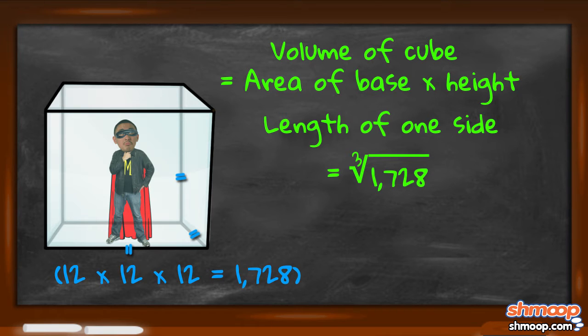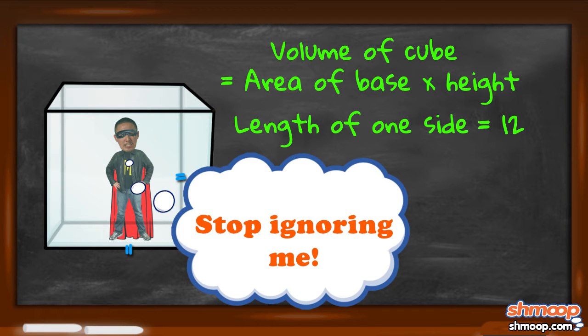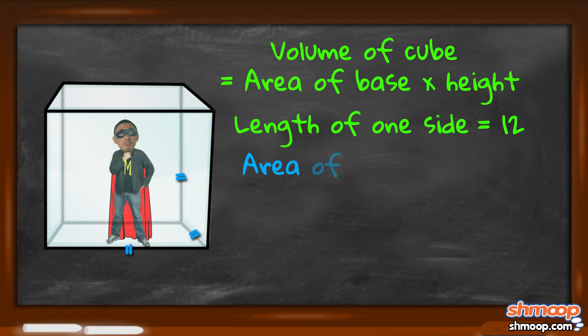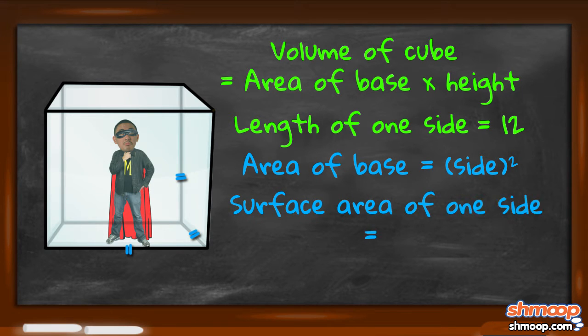Got it? So each side has a length of, magically, 12. Since our area formula for a square tells us that the area of the cube's base must equal the length of one side squared, the surface area of one side must be 12 squared, or 144.